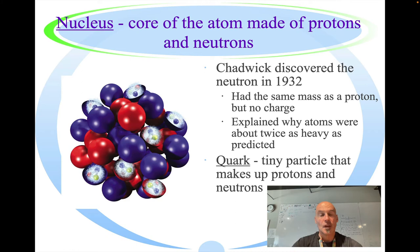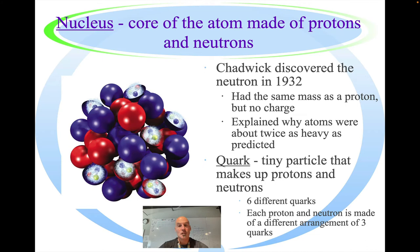A quark is actually a tiny particle that makes up the protons and the neutrons in the nucleus. There are six different quarks. Each proton and neutron is made of a differing arrangement of three quarks.